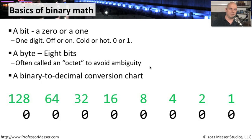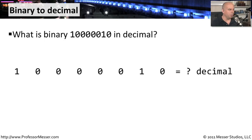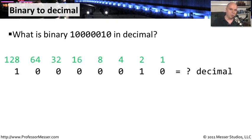Let's try one and see what we get. Our first question: what is binary 10000010 in decimal? We write out all of those bits — 1, 0, 0, 0, 0, 0, 1, 0 — and then put our conversion chart right on top of them, starting with one and doubling all the way across.